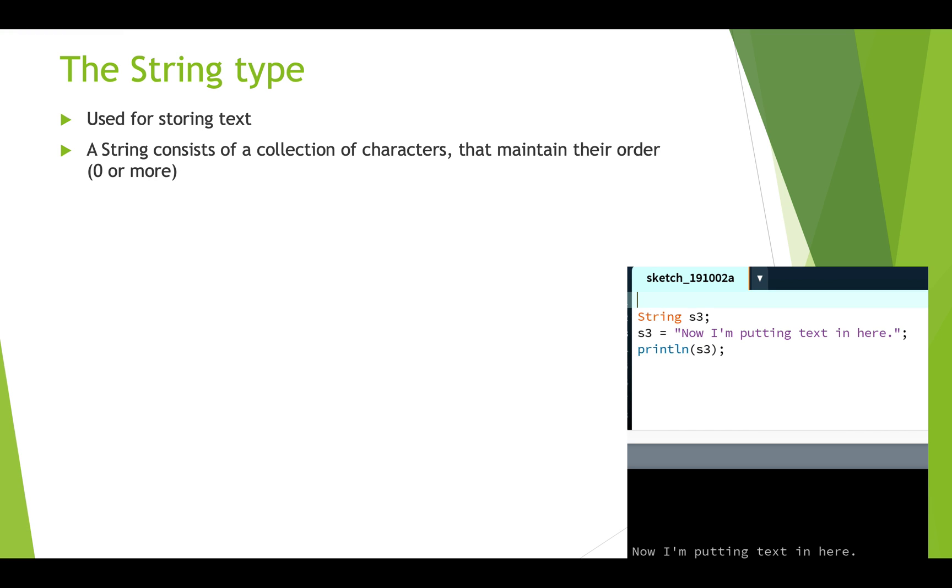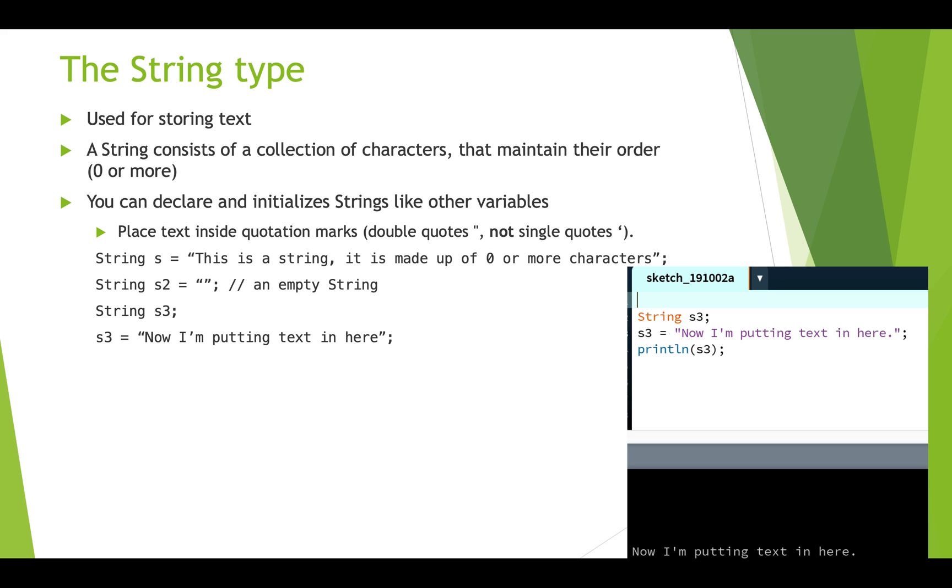So the string type is used to store text, and it's actually just a collection of characters that maintain their order. So your name might be a string, for example. You can declare and initialize strings like you've declared other variables in processing. You use the type, which in this case is string with a capital S, and then you create a variable name, and you can then initialize it. And to initialize strings, you put the text that you want to be in that string inside quotations. These have to be double quotations, not single quotation marks.